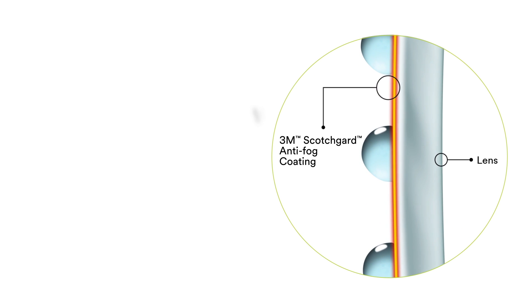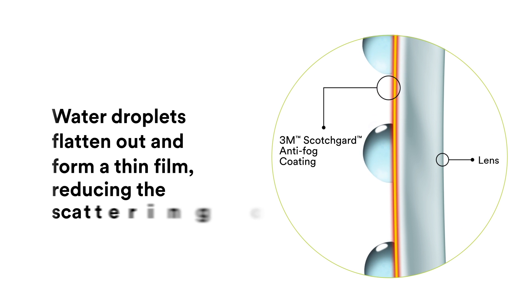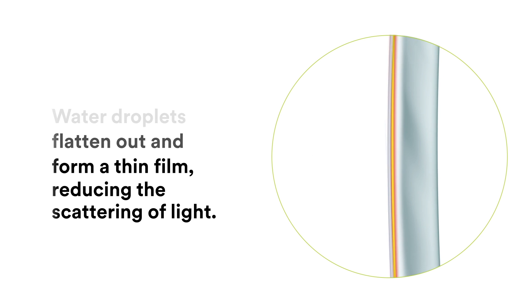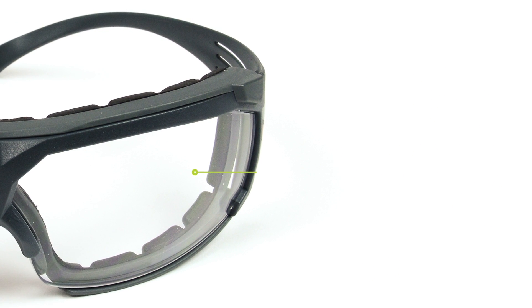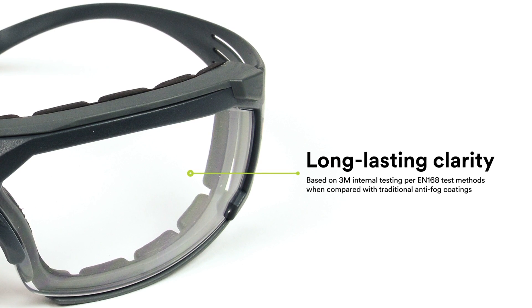Scotchgard anti-fog coating causes these droplets to flatten out and form a thin film, reducing the scattering of light and allowing you to see clearly longer. The anti-fog coating is effective for at least 25 washings with water, so you get long-lasting clarity.